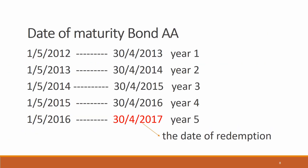Now, look at the date of maturity for Bond AA. The company issued the bond on 1 May 2012. Year 1 ends 30 April 2013. We calculate from Year 1 until Year 5, and the date of redemption or maturity for Bond AA is 30 April 2017.